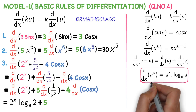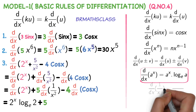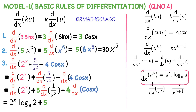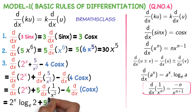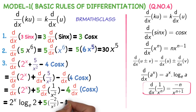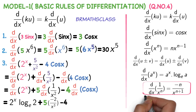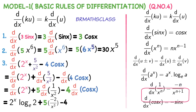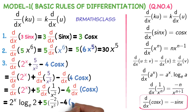We learned this formula in the 17 formulas: d by dx of 1 by x power n is minus n divided by x power n plus 1. Applying the same formula here, what you will get? Minus 2 divided by x power 2 plus 1, that is minus 2 divided by x cube. Minus 4 into derivative of cos x. Derivative of cos x is minus sin x. So applying the same formula, we can write the final answer as: 2 power x into log 2 base e minus 10 divided by x cube plus 4 into sin x.